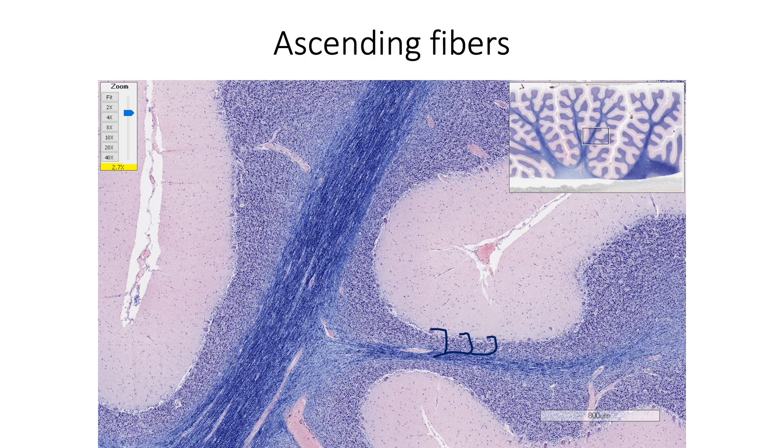The second type of fibers are the mossy fibers that include all the remaining afferents to the cerebellum. They give rise to 50 to 100 collaterals. Each of these collaterals terminate as a rosette in the granular layer and they form synaptic glomeruli with the dendrites of granule cells and Golgi cells. Axons of the granule cells divide into two parallel fibers each of which synapses with dendrites of 500 to 1000 Purkinje cells. Thus, each mossy fiber by its branching and through parallel fibers can activate hundreds of thousands of Purkinje cells.